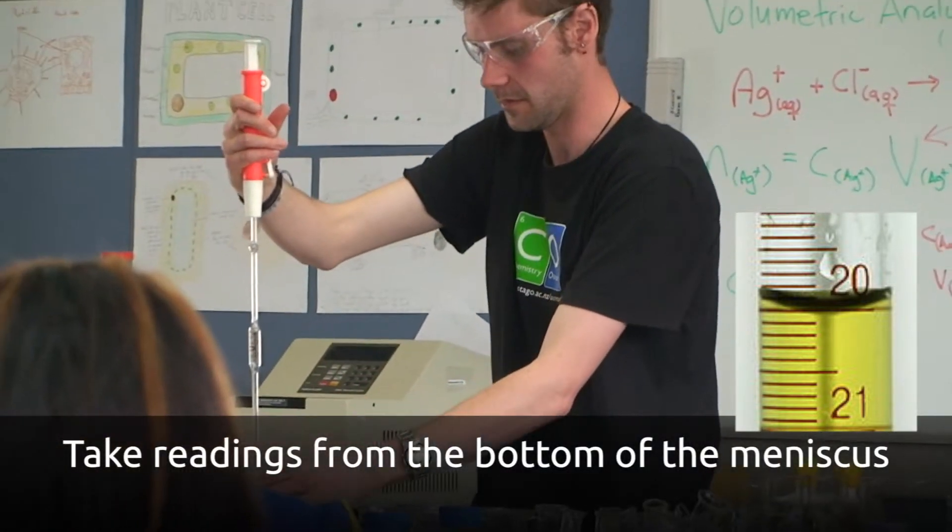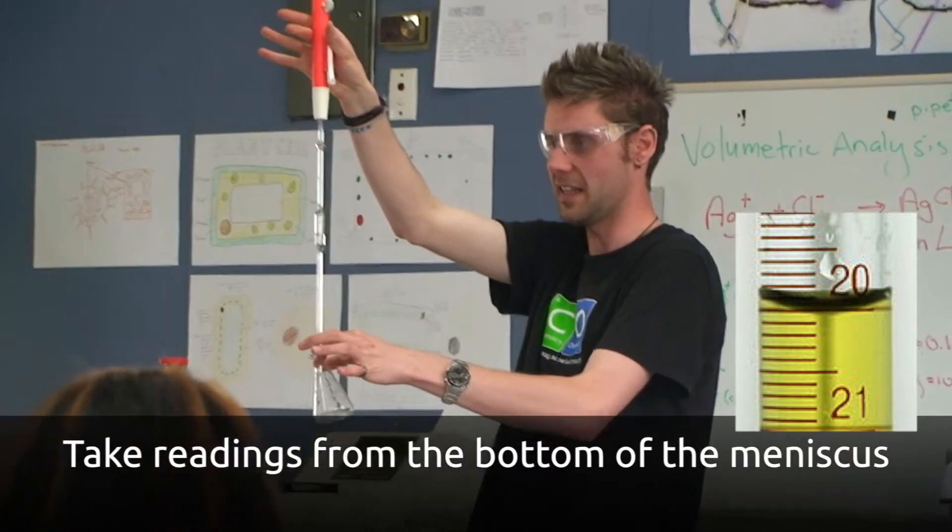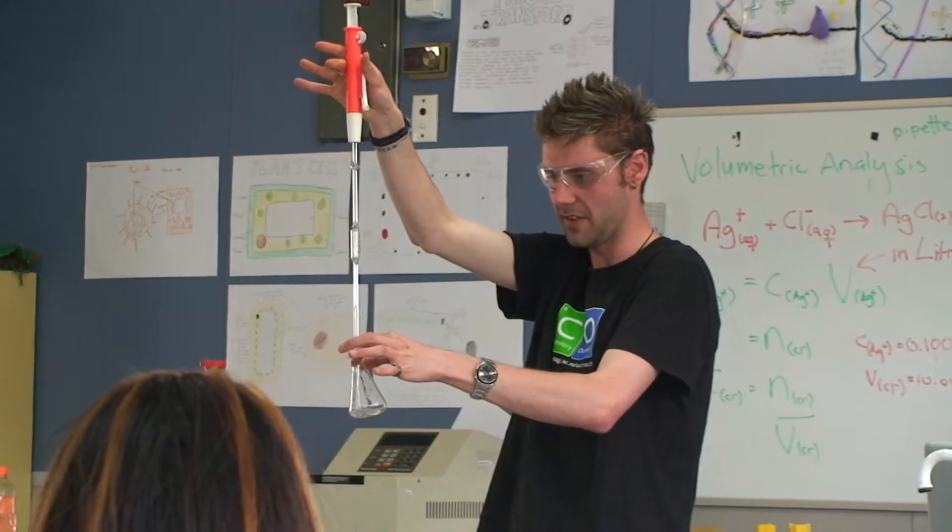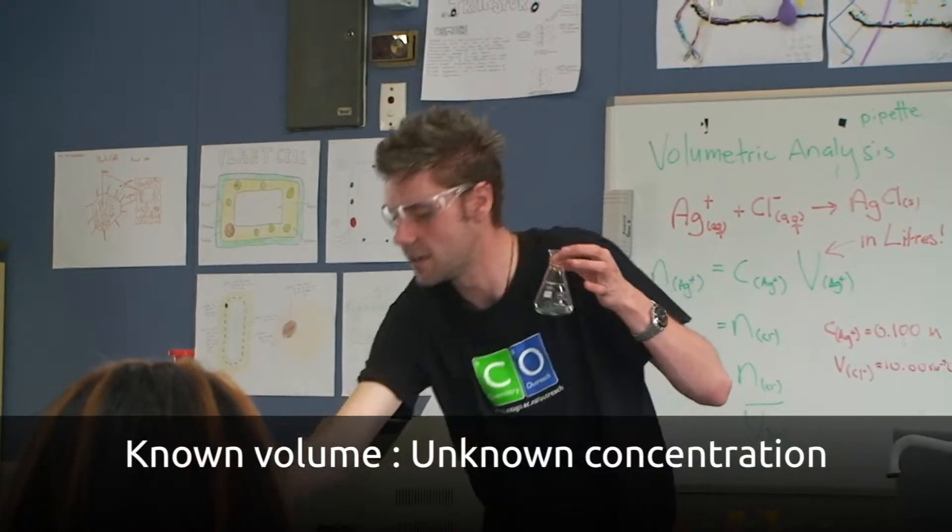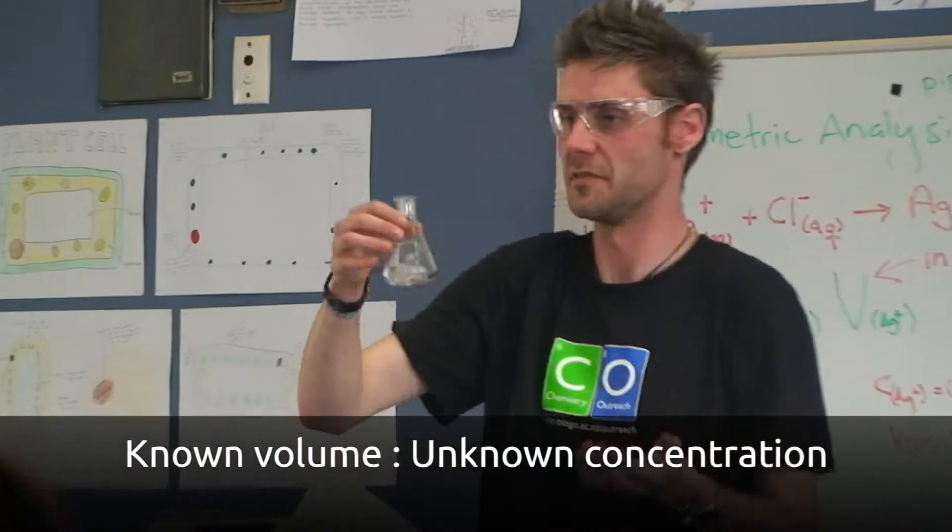So then you can empty it in here. Pull that lever, release the vacuum, and it flows into the flask. And so in here, I have exactly 10 milliliters of seawater.